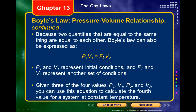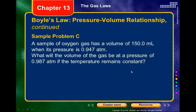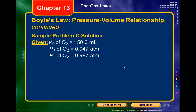A typical problem: a sample of oxygen gas has a volume of 150 milliliters at a pressure of 0.947 atmospheres. What would the volume be at a pressure of 0.987 atmospheres, with temperature remaining constant? This is Boyle's law — volume and pressure, temperature constant.